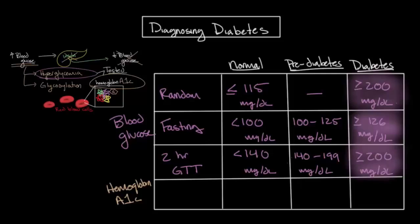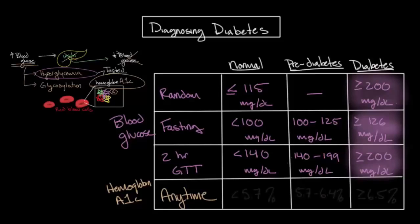Fortunately, hemoglobin A1C testing is a little more straightforward, as the timing of the test does not matter. Similarly to the blood glucose test, there is one important number to remember: a level greater than or equal to 6.5% is consistent with diabetes mellitus.